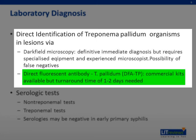For direct fluorescent antibody testing, one looks for Treponema pallidum in a direct lesion smear by immunofluorescence. The advantages are that the test is commercially available and compares favorably with dark field microscopy. The disadvantage is a turnaround time of one to two days.